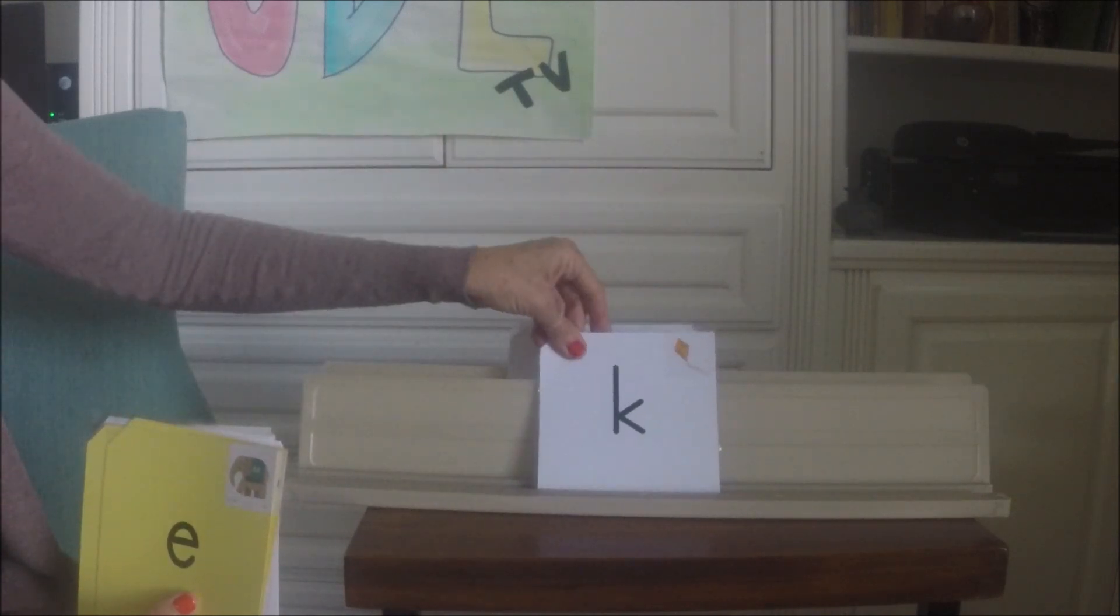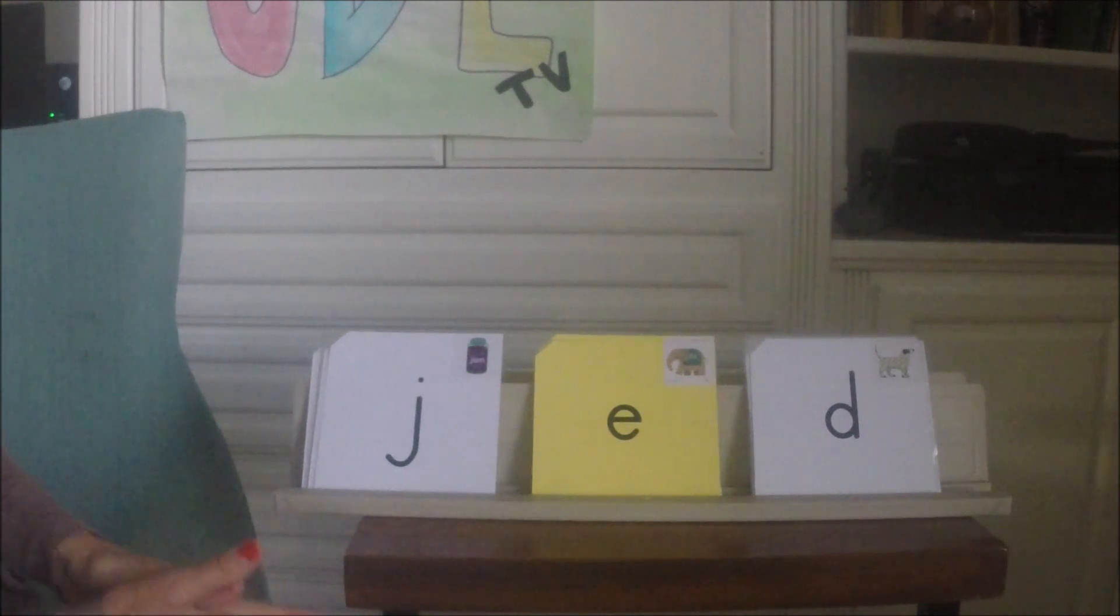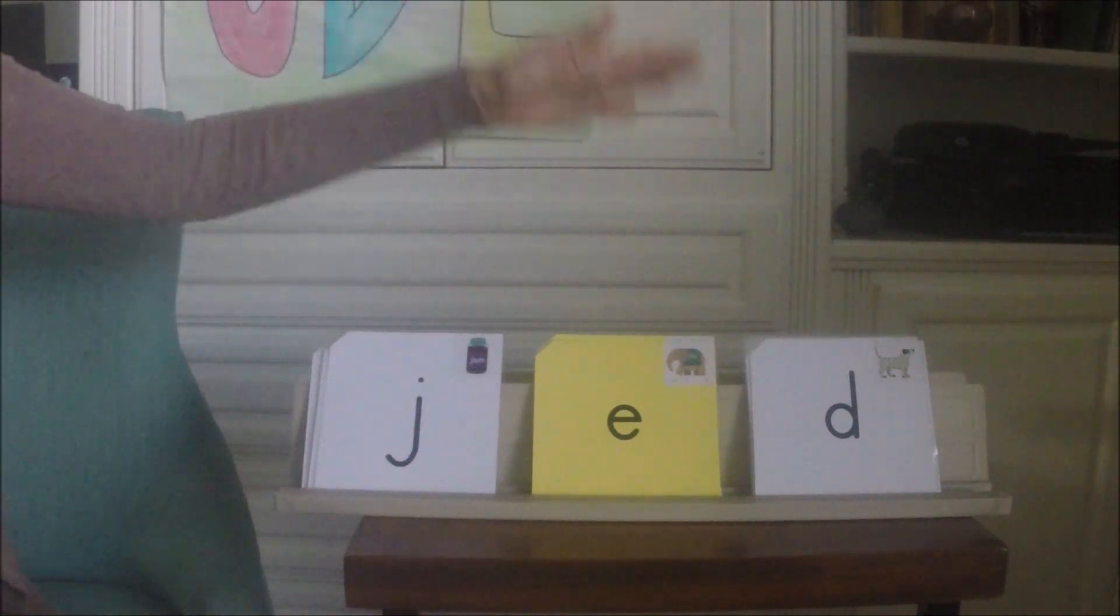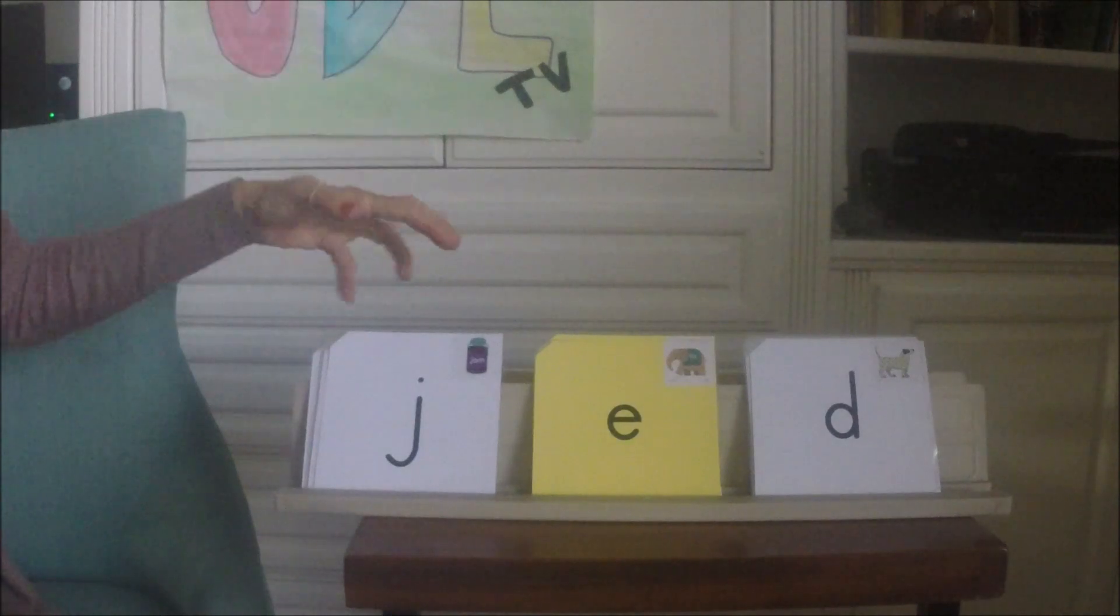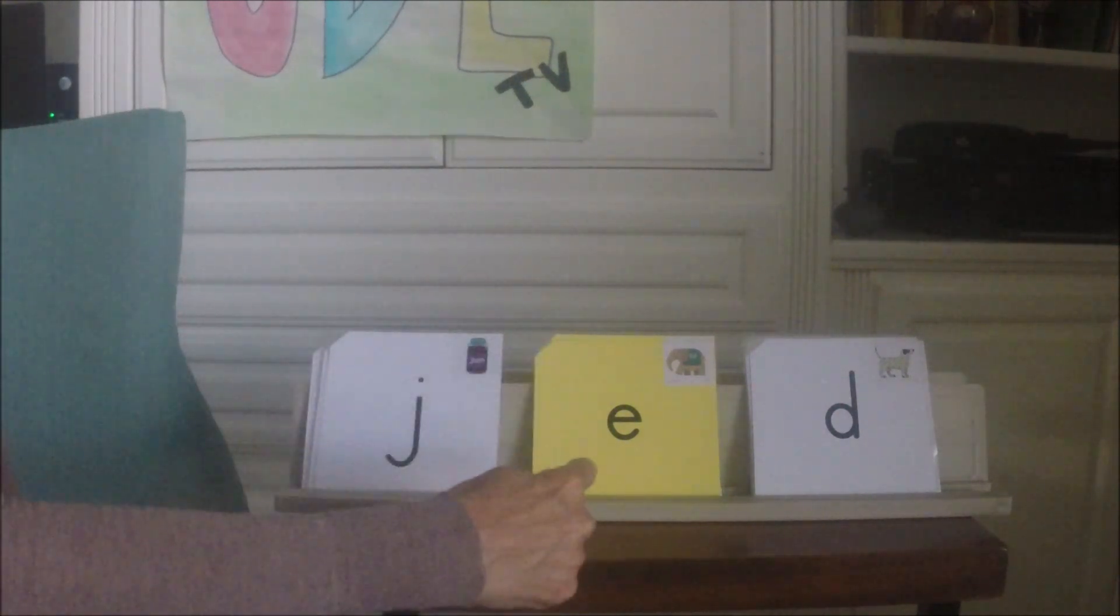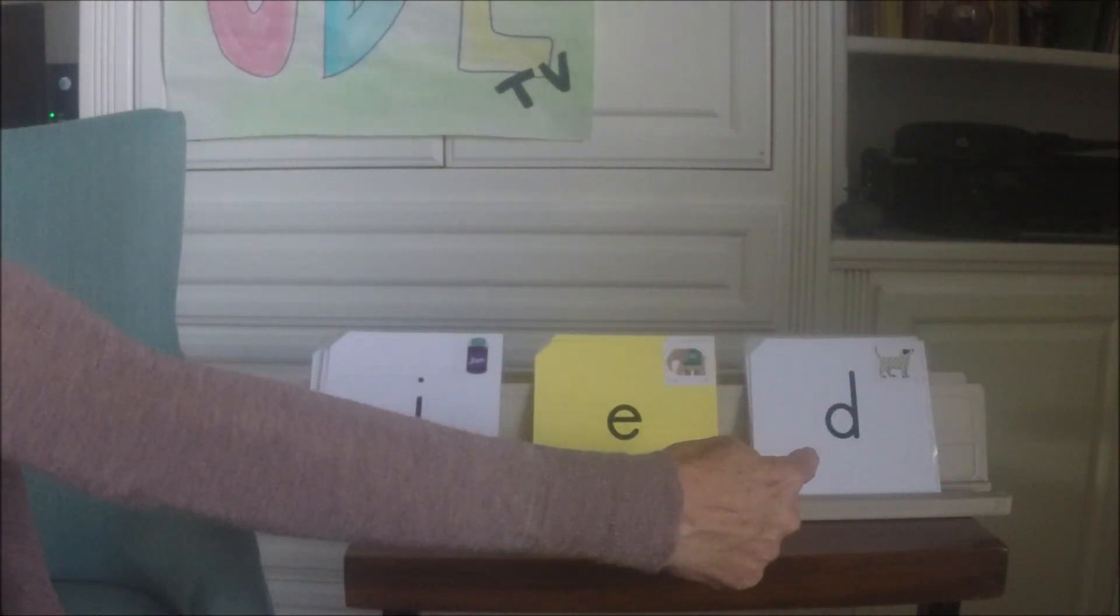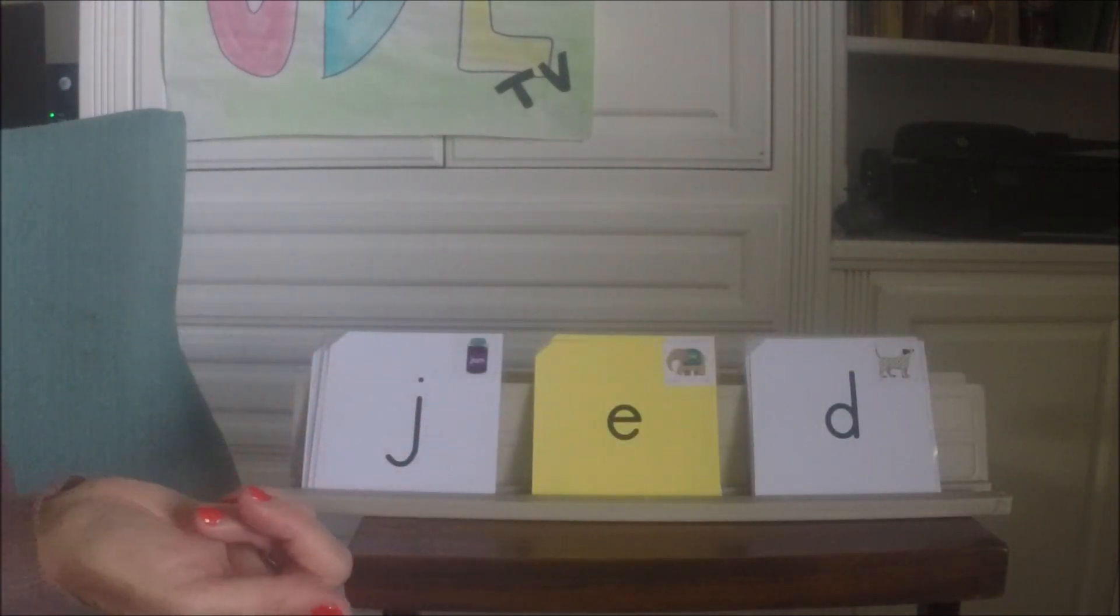All right, so now we have our sound pile set up with all the vowels in the middle and our beginning sounds and ending. Again, most of these words will be nonsense words, but we want to point to each letter, say its sound, and then blend it. Your child should be doing those motions with me, so it'll go like this: j, ee, d, jed. Change the letter: h, e, d, head.